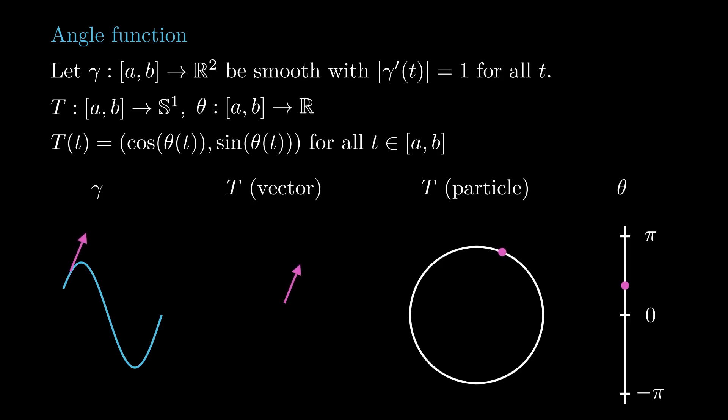Of course, theta is not unique, as we can add a multiple of 2π without changing the value of trigonometric functions. Also, notice that if a curve starts and ends with the same direction, the value of theta is not necessarily the same at the beginning and at the end, as it may have shifted by a multiple of 2π.